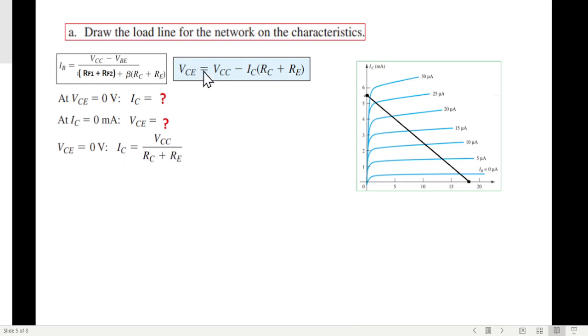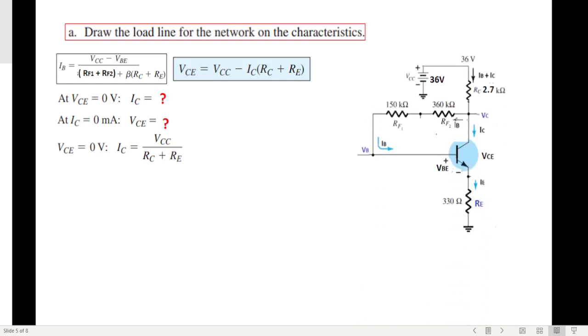So here, if you put VCE equal to 0, then the equation will become like this: IC is VCC over RC plus RE. And now to put the value, we bring the circuit back to check with the values. VCC is 36, RC 2.7 and RE is 330 ohm. So plugging in the values, we get IC to be 11.88 milliampere.